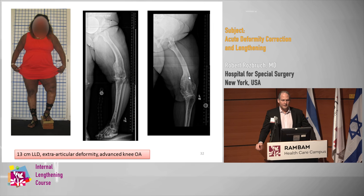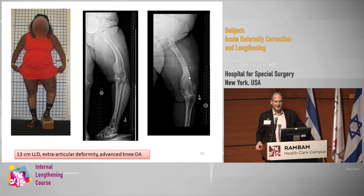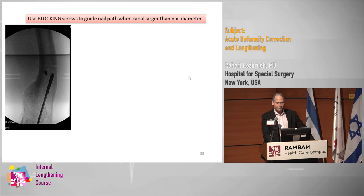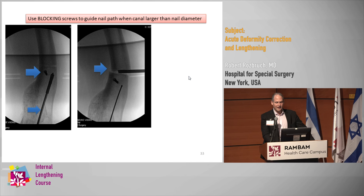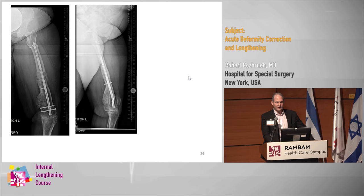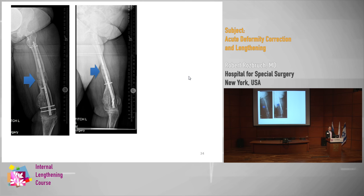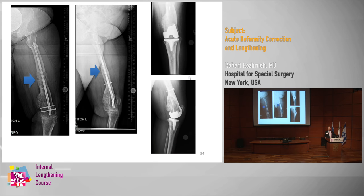This lady had advanced arthritis of the knee with a varus procurvatum deformity of the femur and a big leg length discrepancy. Planning for the two planes, blocking screw placement, reaming in the correct direction in the distal segment, osteotomy to correct the deformity, correction, passage of the nail. We did the maximum lengthening — a 6-centimeter lengthening — correcting the extra-articular deformity. But she was still plagued by her advanced arthritis. When we went back to take out the nail at about nine months, I did a knee replacement at the same time. So you can use different techniques to achieve your goal — you start with this and you end with this.